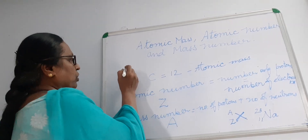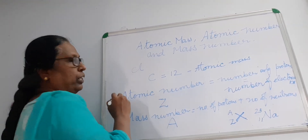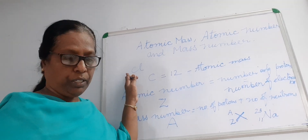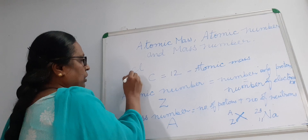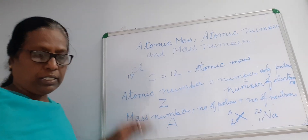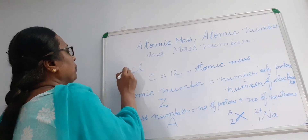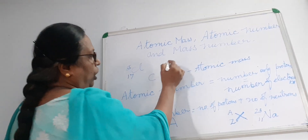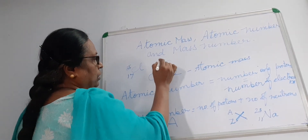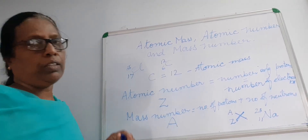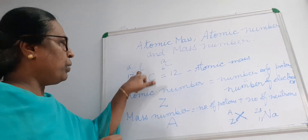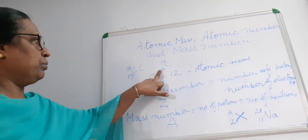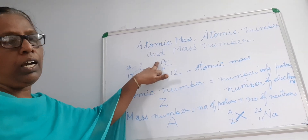For example, chlorine has an atomic number of 17 and a mass number of 35. If you take carbon, the atomic number is 6 and the mass number is 12. So the symbol represents the element, the lower number is the atomic number, and the upper number is the mass number.